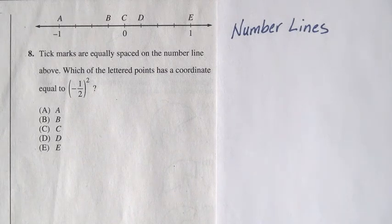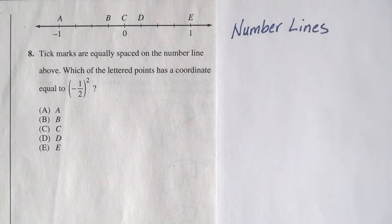Question 8 reads: Tick marks are equally spaced on the number line above. Which of the lettered points has a coordinate equal to negative 1 half squared?